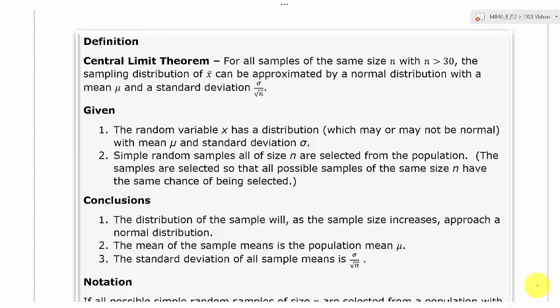For all the samples of the same sample size — you do need to be collecting samples that all have the same sample size n — and you also want n to be greater than 30. The sampling distribution of the means, x-bar, can be approximated by a normal distribution with a mean mu. Remember, when you see a Greek symbol, that's from the population. So whatever your original population mean was, that's what this sampling distribution mean will also be, and the standard deviation will be the population standard deviation divided by the square root of n.